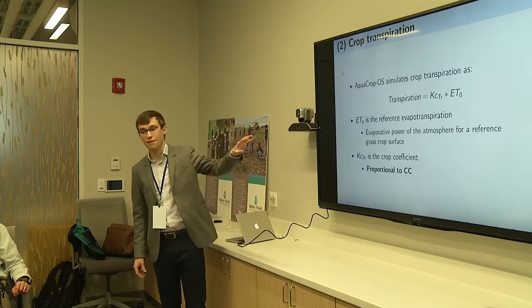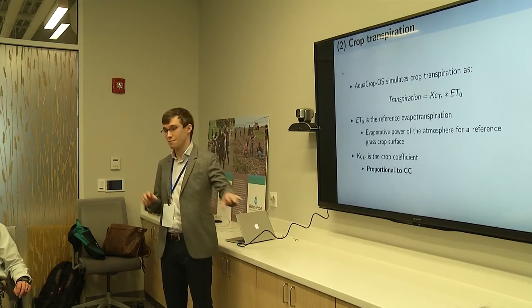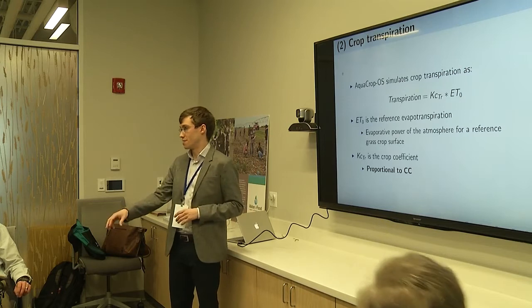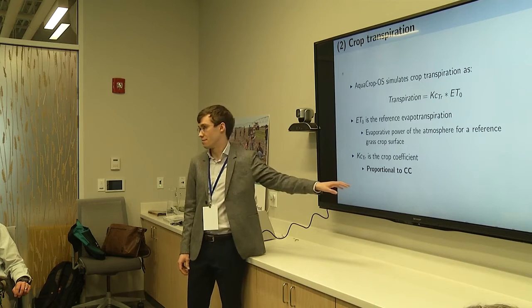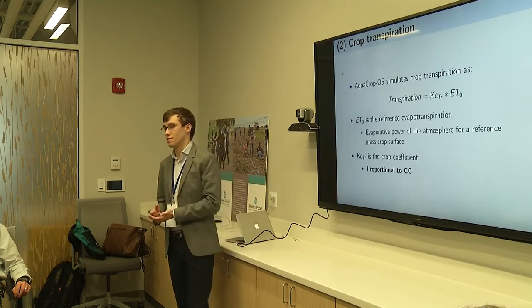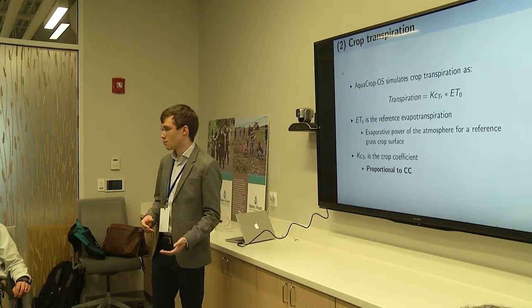The Kc value is basically proportional to the size of the canopy cover. Early in the growing season when the canopy is very small, Kc will be very small and transpiration will also be very small. As the canopy expands, Kc will become larger and therefore transpiration will also become larger, assuming there's enough water in the soil to satisfy that demand.